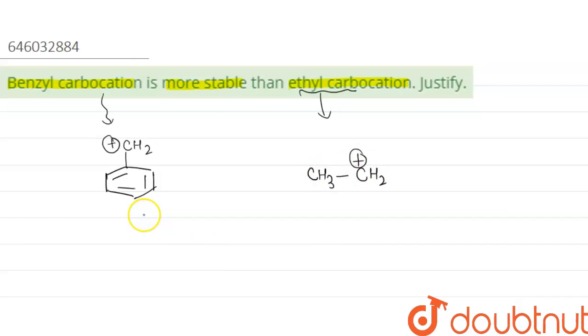Now the question is why benzylic carbocation is more stable than ethyl carbocation. It is because in case of benzylic carbocation, due to resonance, there is resonance which makes this one more stable.